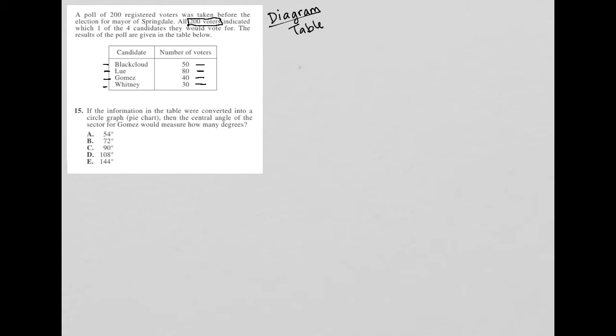So here's what we need to understand. Yes, it does mention a circle graph and a pie chart and all that. But here's what we have to understand. Having the number of votes does not tell me exactly what size each slice of pie should be.